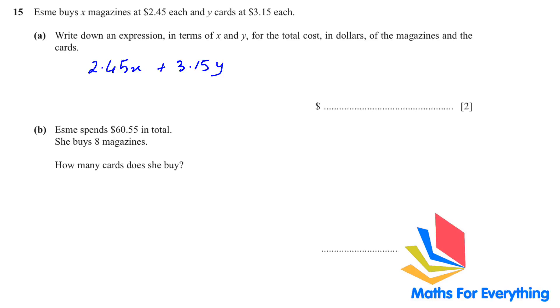Part B of the question. SME spends $60.55 in total and she buys 8 magazines. X is 8 magazines. How many cards does she buy? So let's write the equation: 2.45 times 8 plus 3.15Y equals 60.55. So 3.15Y equals 60.55 minus 2.45 times 8. You can put in the calculator now or later. This will give you 40.95.